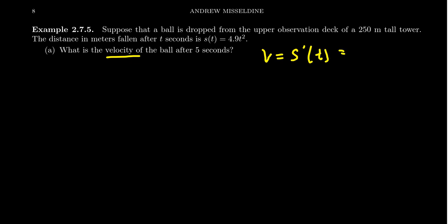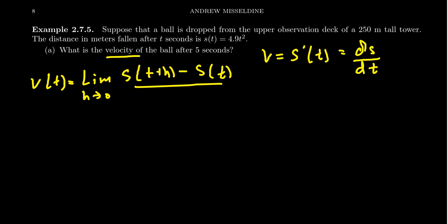So S'(t). That is to say, velocity is the change of distance with respect to time. Velocity is the first derivative of our function with respect to time. So if we want to compute the velocity after 5 seconds, we need to compute the velocity function, which we're going to do by computing a derivative. Now, we're going to do this by the definition of the derivative, which, recall, is the limit as h approaches 0 of the difference quotient S(t+h) minus S(t) divided by h.